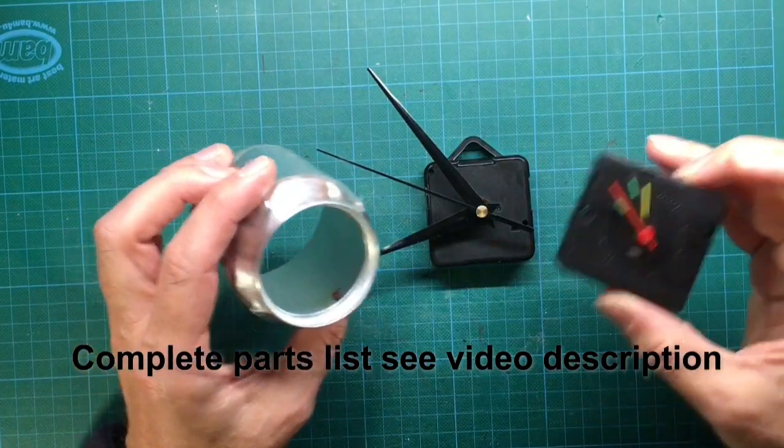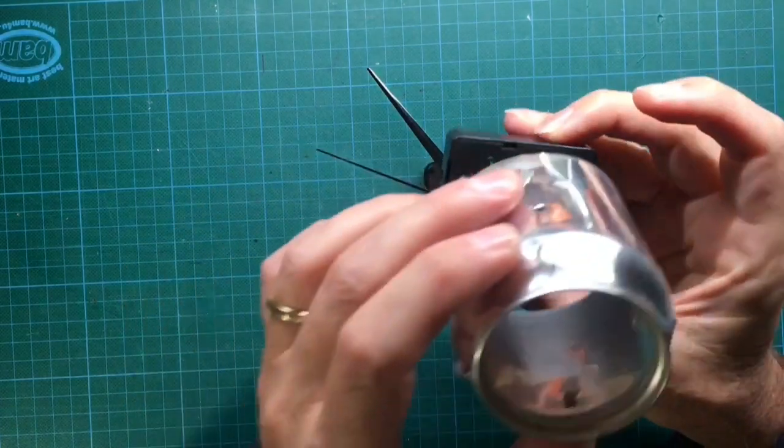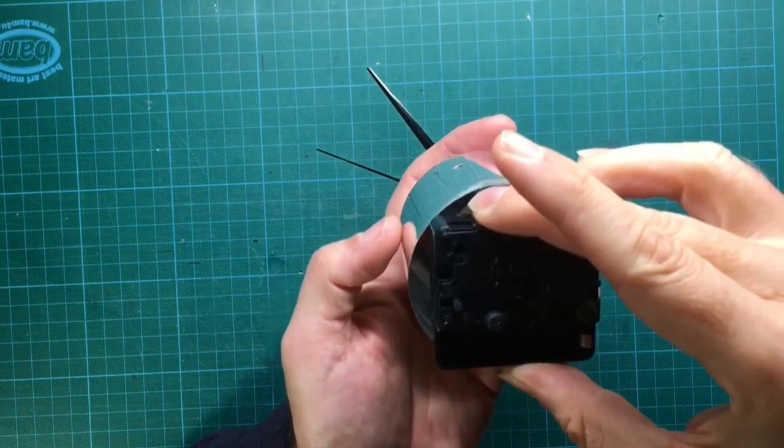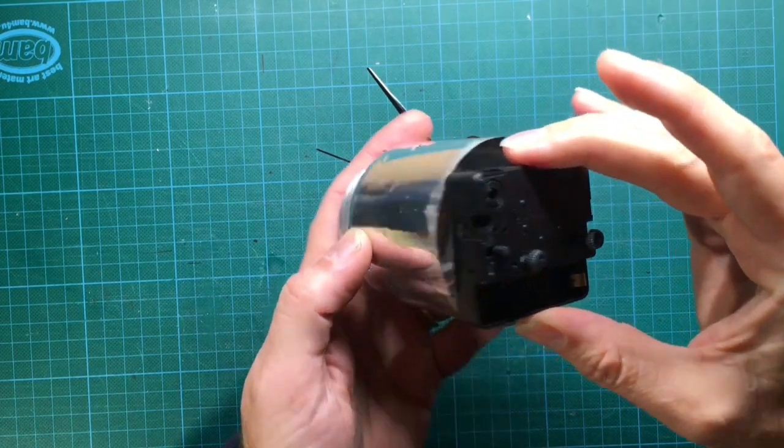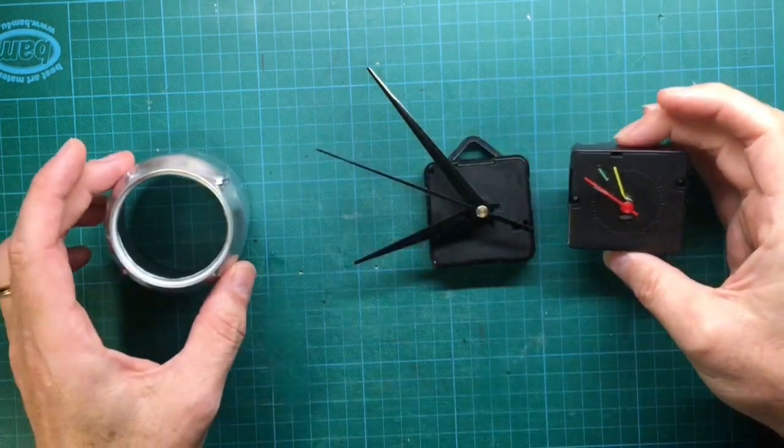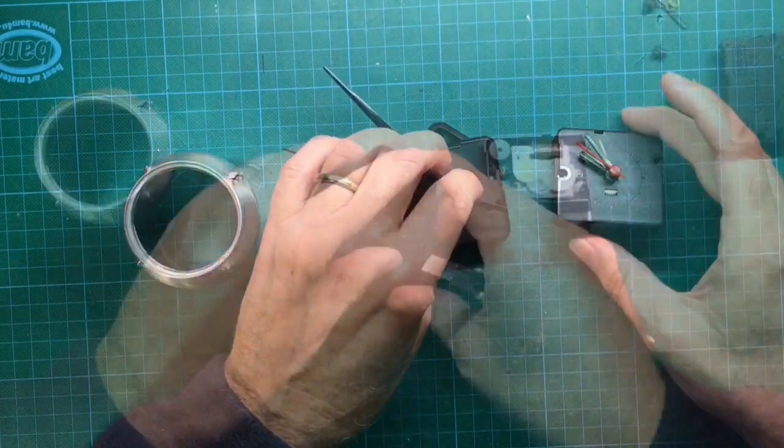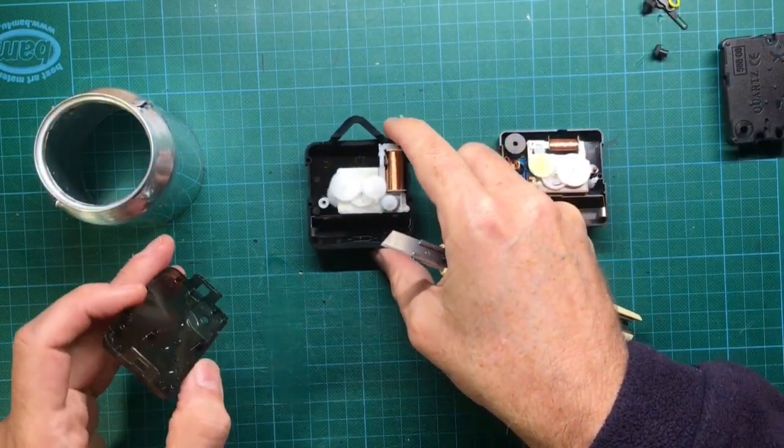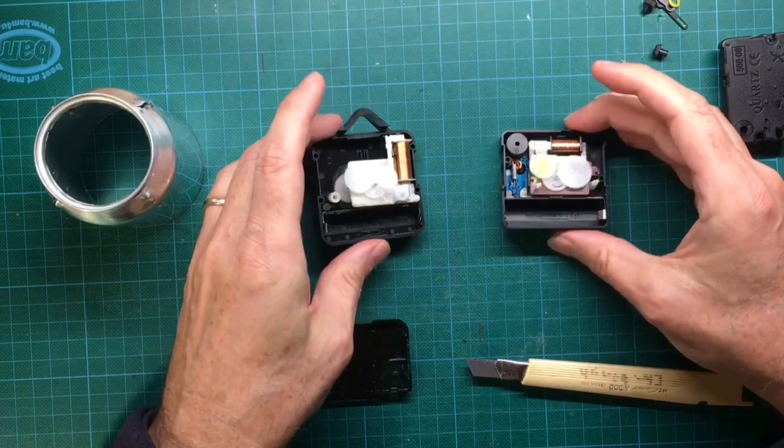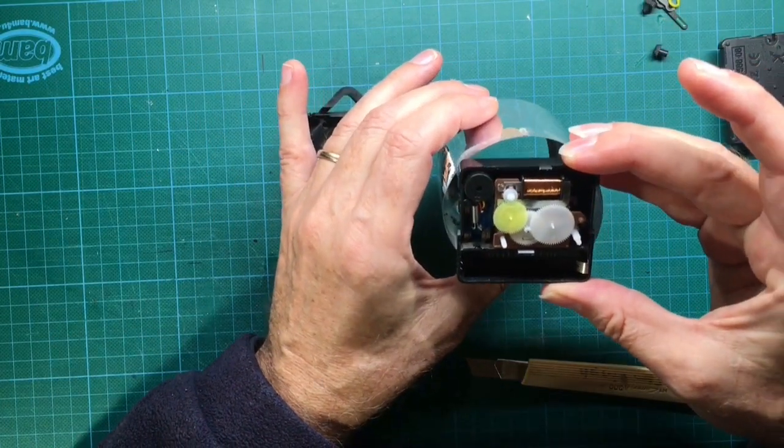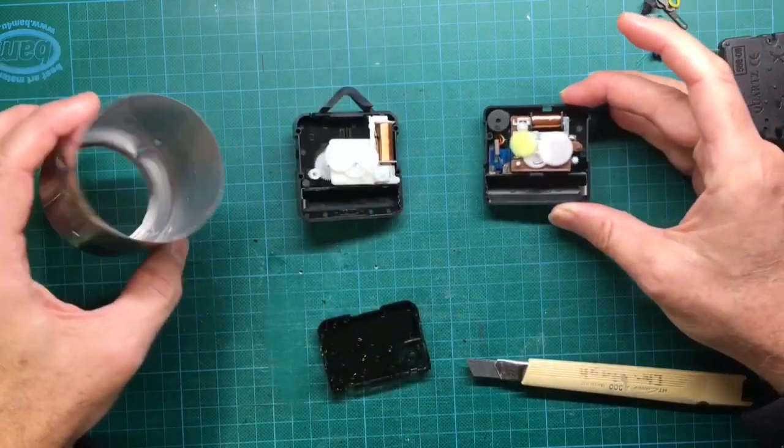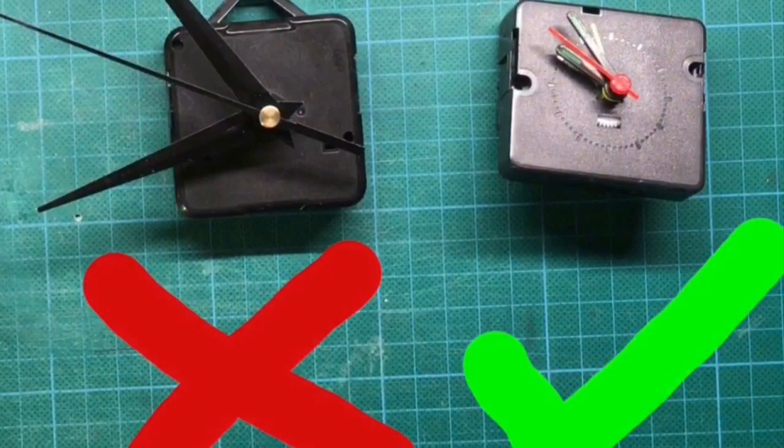Searching the internet you basically find two types of DIY quartz clock modules. One with an alarm function and the other one with just showing time. As you can see, none of the two models fit into the bigger soda can directly so we have to take them apart. After comparing the two models I found that only the alarm clock can be modified to fit the soda can.